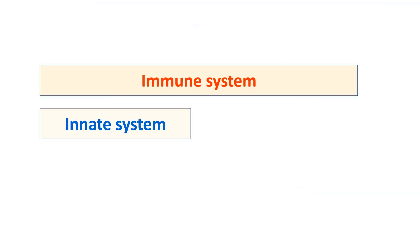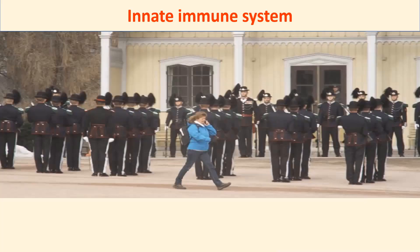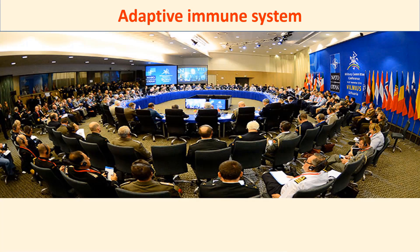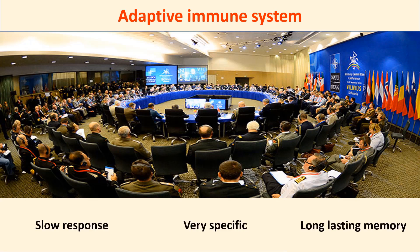The immune system is divided into innate and adaptive immune systems. The innate immune system is the first line of immune response — it is a fast response and acts generally, not specifically. On the other hand, the adaptive immune system has a slow immune response. It is very specific and produces long-lasting immune memory.